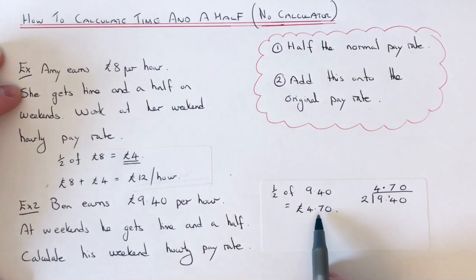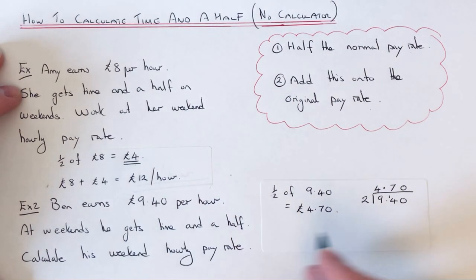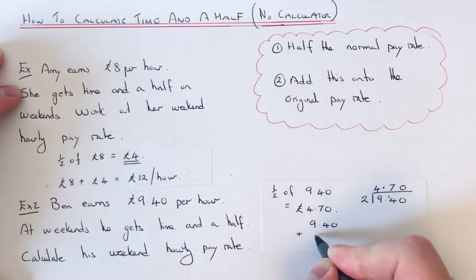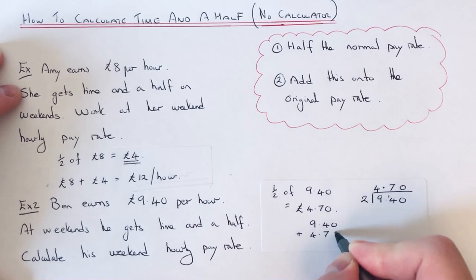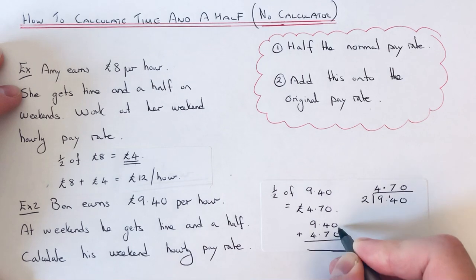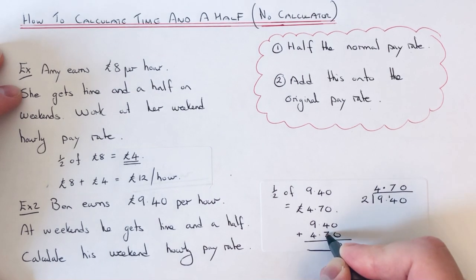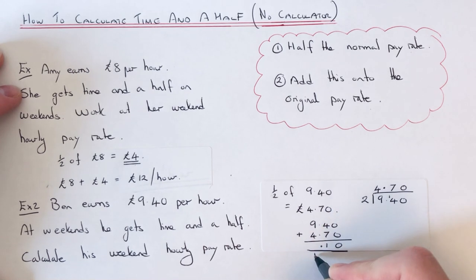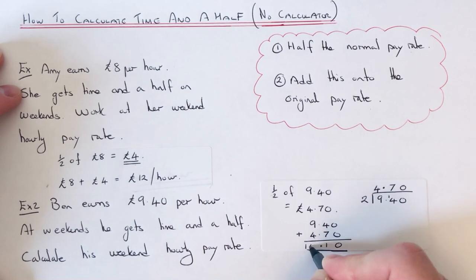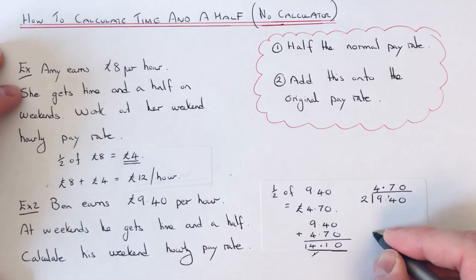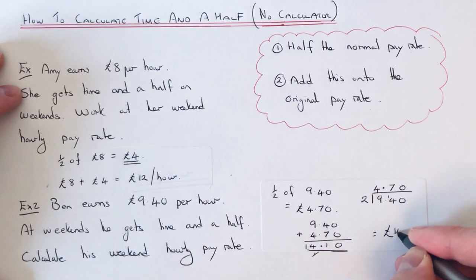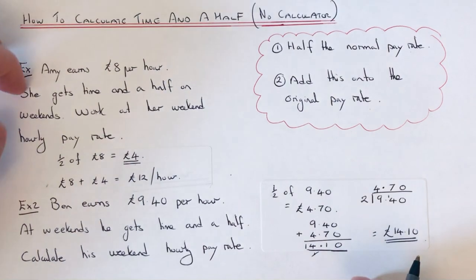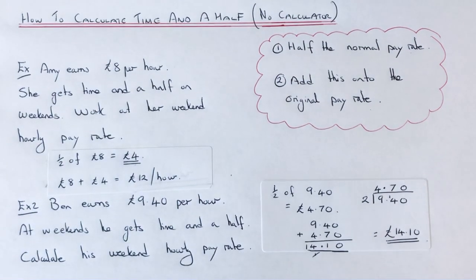Then we just add this back on to the original pay rate, so we do nine pound forty add four pound seventy. Zero add zero is zero, seven add four is eleven, nine add four is thirteen plus the one is fourteen. So our time and a half pay rate is fourteen pound ten.